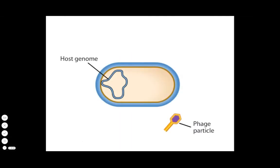Unlike a virulent phage, a temperate phage, such as phage lambda, does not necessarily cause lysis after entering a host cell. Instead, the temperate phage may embark on a pathway called lysogeny.